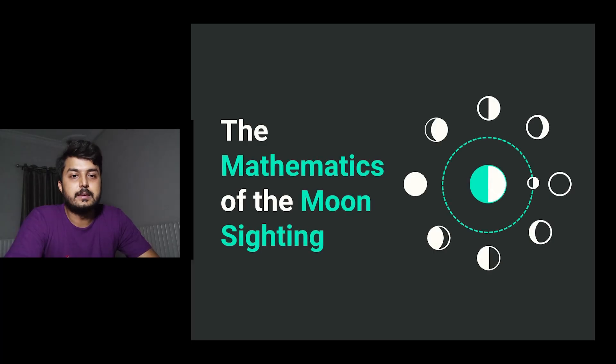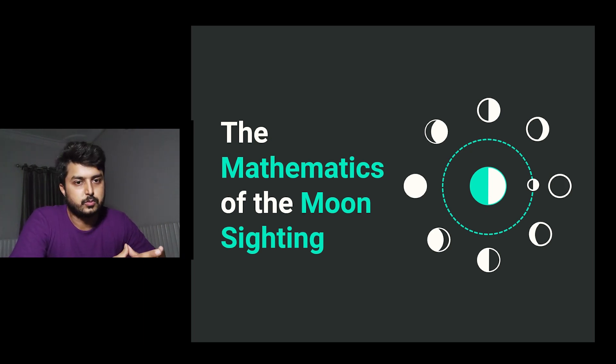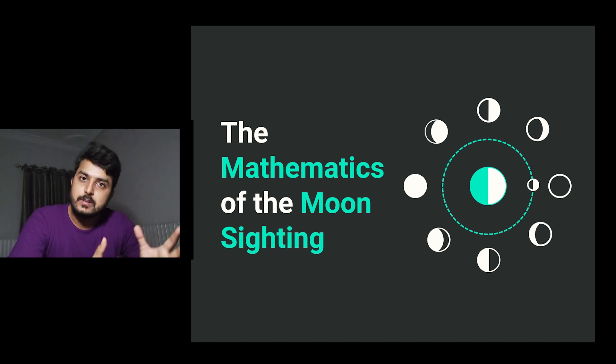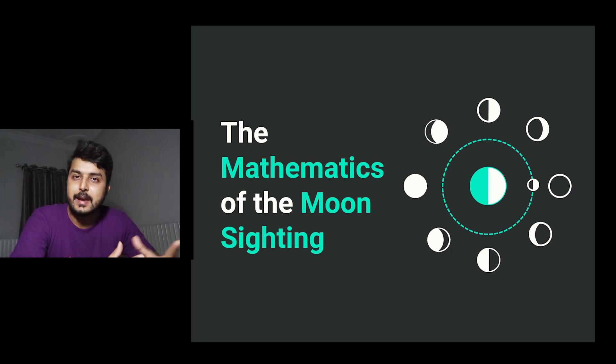The topic we are discussing today is related to the time that is Ramadan. It is not exactly about Ramadan but about the start and end of Ramadan. Our topic for today is the mathematics of the moon sighting. As we know, there is a beauty of uncertainty in the lunar month — whether it would be of 29 days or 30 days. First we have to understand the relation between time and celestial motions.